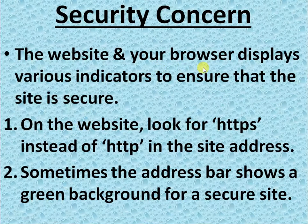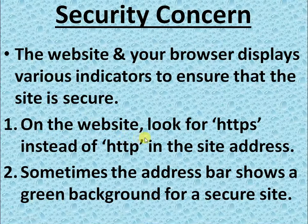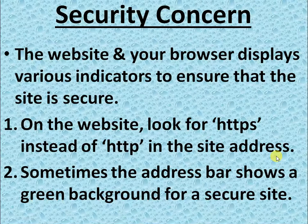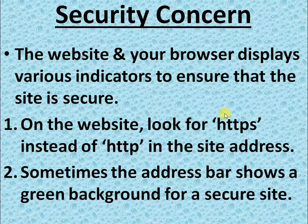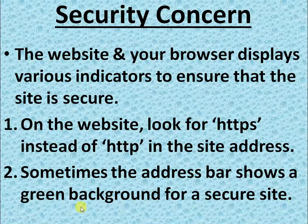The website and browser display various indicators to ensure that the site is secure. Number one: on the website, look for HTTPS instead of HTTP in the site address. In the address bar, you should look for HTTPS, not HTTP. If HTTPS is there, it means the website is secure. Another point: sometimes the address bar shows a green background for a secure website. If the address bar has a green background, it means the website is secure.